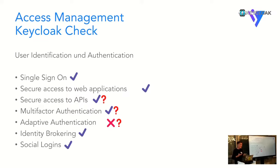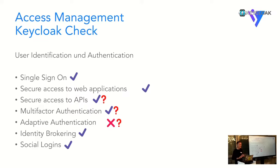For adaptive authentication there are some things with context-based authentication and access control as we heard in Thomas's talk. You can do lots of extensions here - it's also something where you can bring in AI approaches for anomaly detection if you want to. But to use AI you need to collect a lot of data and create user profiles, and then the question is whether you want to do that in your context or whether it raises other data protection concerns.